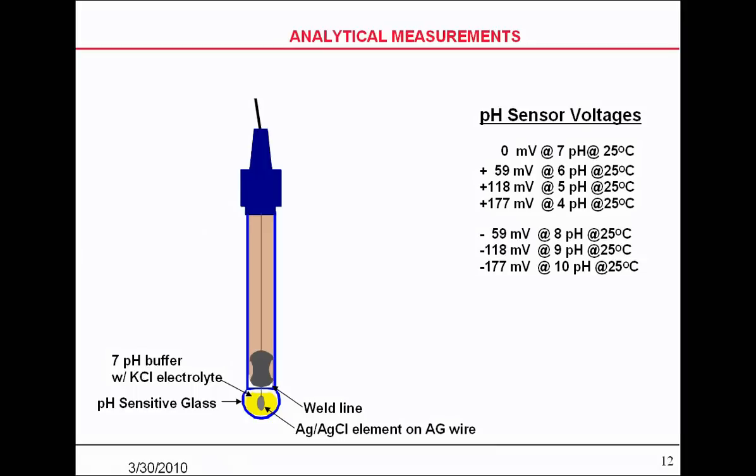You get a positive 59 millivolts at 6 pH, and negative 59 millivolts at an 8 pH, and 118, 177 as you change pH values. But those are always true at 25 degrees C.